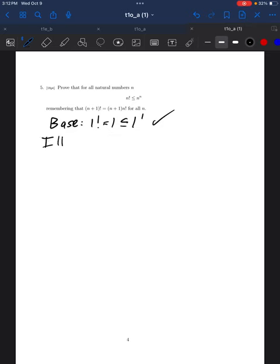Then we assume our inductive hypothesis, n factorial is less than or equal to n to the n. Again, if you like doing k's here, that's great. To prove n plus 1 factorial is less than or equal to n plus 1 to the n plus 1.